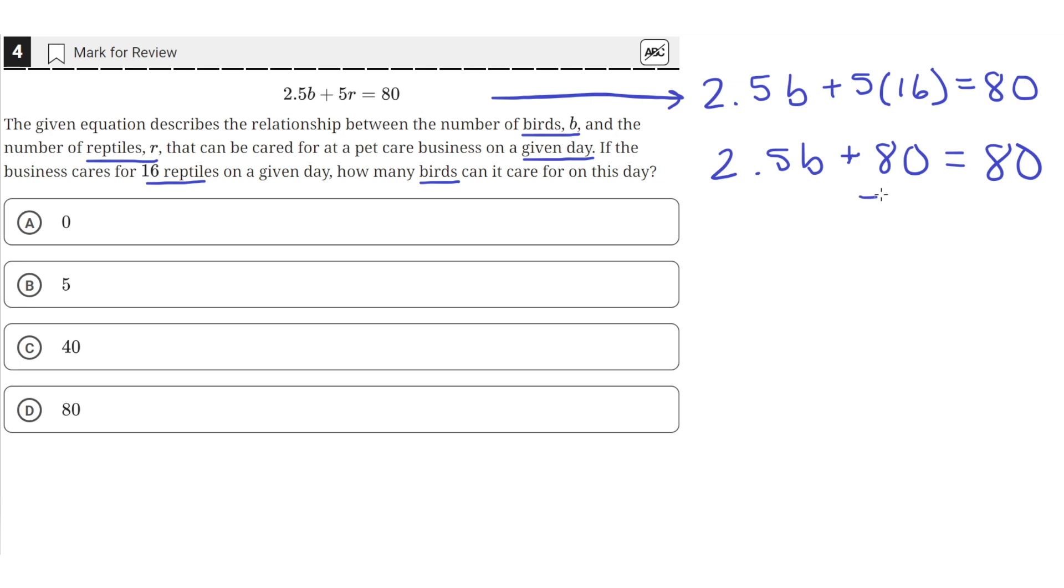So now if we subtract 80 from both sides of the equation, we get that 2.5B equals 0. Since this has to equal 0, the value of B must be 0, because 2.5 times 0 is equal to 0. We could also have gotten that by dividing both sides by 2.5 and recognize that 0 divided by anything is still equal to 0.